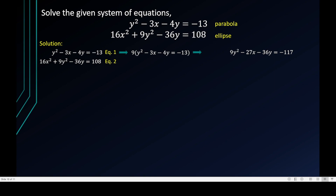The result is 9y² − 27x − 36y = −117. I leave a space for the x² term since equation 1 has none, and likewise for the x term in the constant alignment. Now I subtract equation 2 from the multiplied equation 1. The 9y² terms cancel to zero, and the 36y terms also cancel.